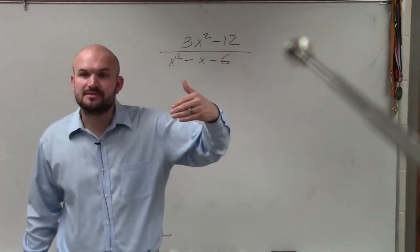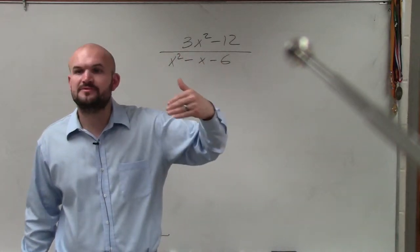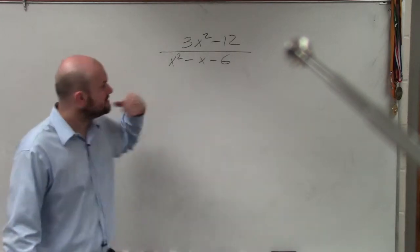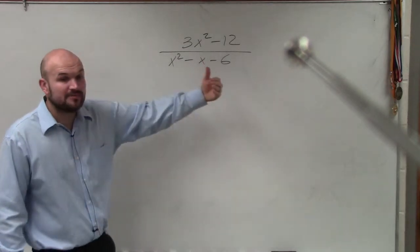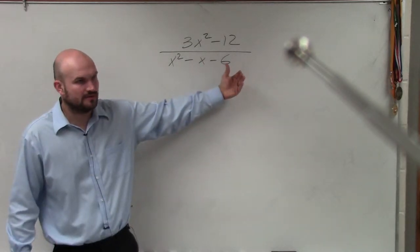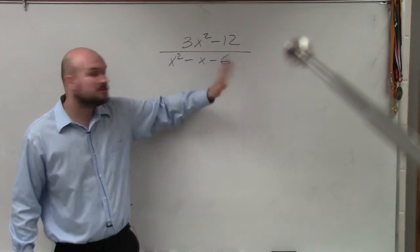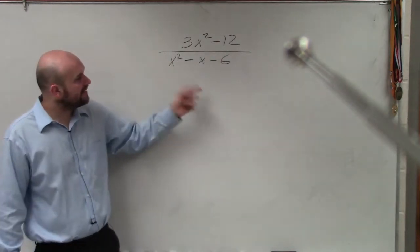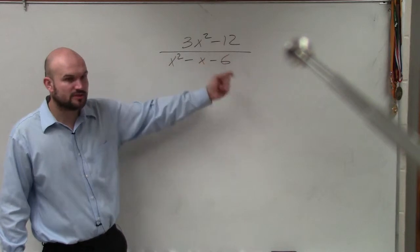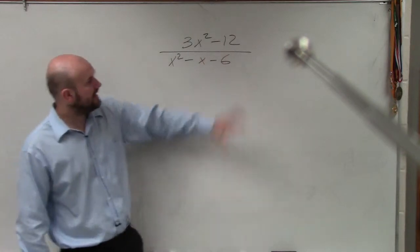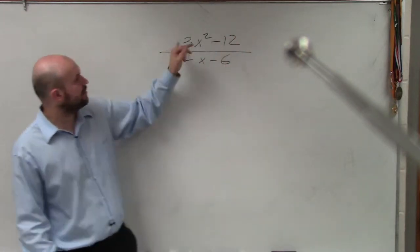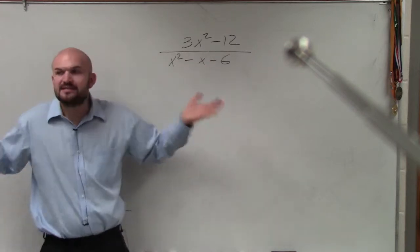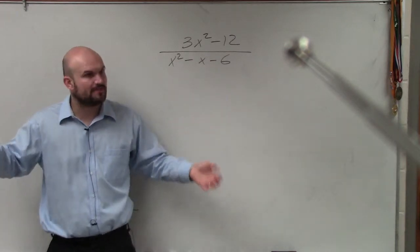When we have terms separated by addition or subtraction, you can't just divide out. Now, the last problem had no addition or subtraction signs, so we simply used the rules of exponents. But now we have terms separated by addition or subtraction, so you can't just say 12 divided by 6, or 3x² divided by x². You can't divide out across addition and subtraction.